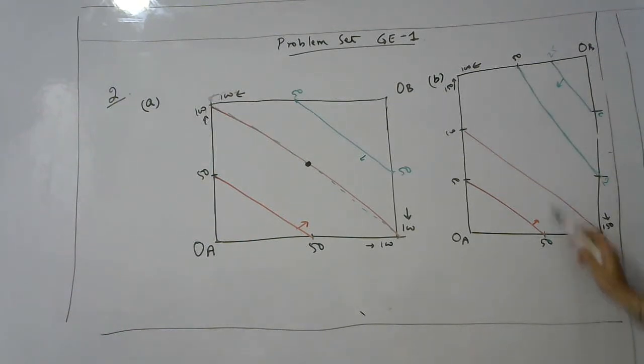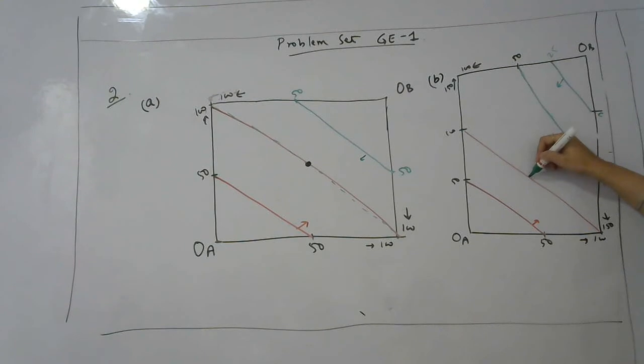And initial endowment is now 50, 50, 50, 100. So ye wala will it lie on? 100 to 0. 100 to 1 to 0. Is wala pe lie karhe ga? Yes. Yeah, 50 plus 50 and this is 100. The utility from this indifference curve. So this will be the initial endowment.